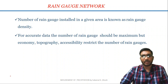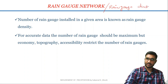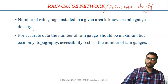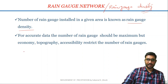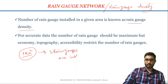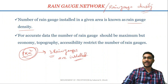Now we are going to discuss about rain gauge network, also called rain gauge density. The number of rain gauges installed in a given area is known as rain gauge density. For example, in an area of one square kilometre if there are three rain gauges installed, the rain gauge density of that area is three. For accurate data, the number of rain gauges should be maximum, since from statistics we know that to get accurate data the sample size should be more.